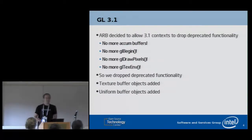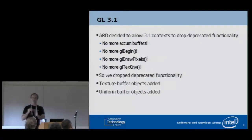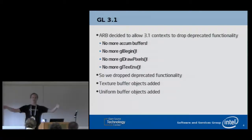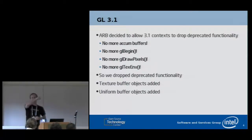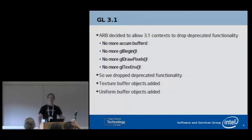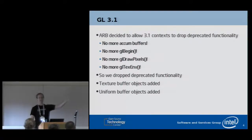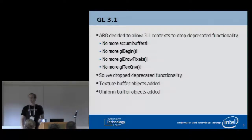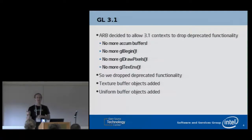GL 3.1 also added actual features, not just removing junk. Texture buffer objects let you reference a huge pile of data in your shader. Before, texture limits were something like 4096 in each dimension, so people packed large arrays into 2D textures and had to figure out X and Y coordinates to access their 1D array. Texture buffer objects give you a different option — a special buffer texture backed by a GL buffer object where you can index from 0 to the size of the buffer, with buffers up to 512K or more. There's no texture filtering, no interpolation — just array access.